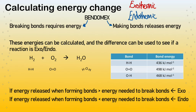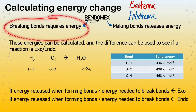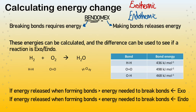The first key term to learn — it's not part of the specification but it's a tool to help you remember how this all works — is the word BENDOMEX. The BENDO part refers to how breaking bonds is endothermic, which means it takes energy in. Breaking bonds requires energy — that's critical. The MEX part: the M refers to making bonds, and that is exothermic, so it releases energy. When we break bonds we require energy; when bonds reform they become more stable and release energy.